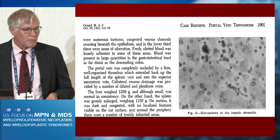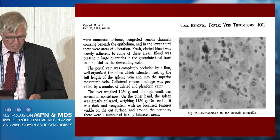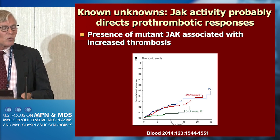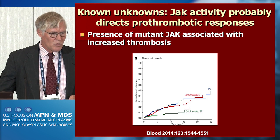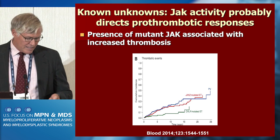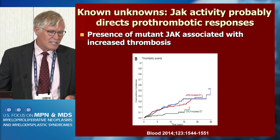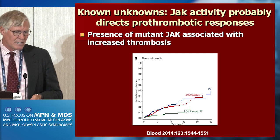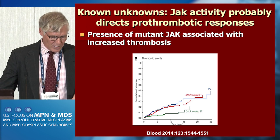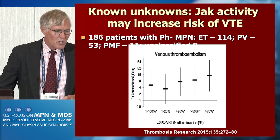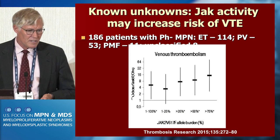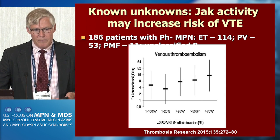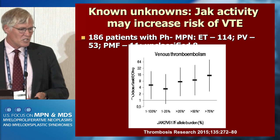I don't know that anybody has really studied hepatic blood flow in splanchnic vein thrombosis syndromes. JAK-mutated ET has a risk of thrombosis comparable to polycythemia vera, but calreticulin-mutated ET does not, suggesting that the presence of mutant JAK is associated with an increased risk of thrombosis. We also see that as the JAK2 allele burden increases, so does the odds ratio of developing a first thrombosis — suggesting a dose effect of mutant JAK expression.